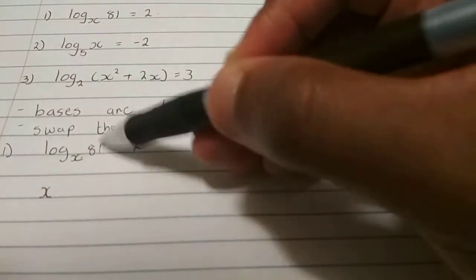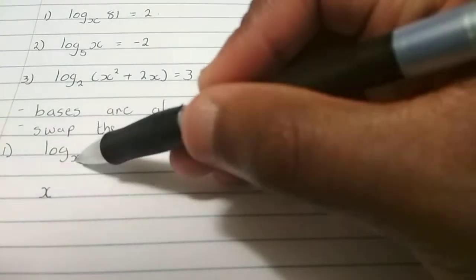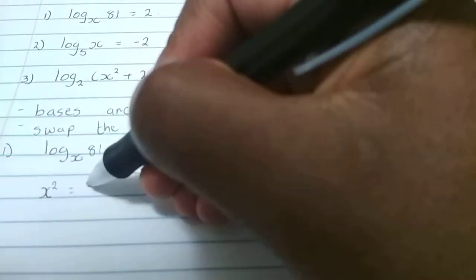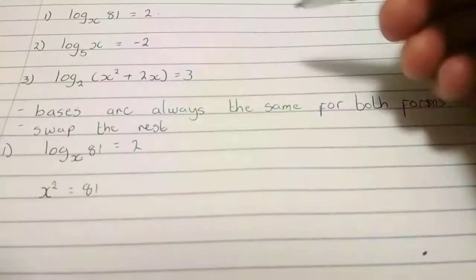So here we are. We have a base. Now we need to swap these two. So we have a base there and then swapping these two. The two comes there and then the 81 goes there.